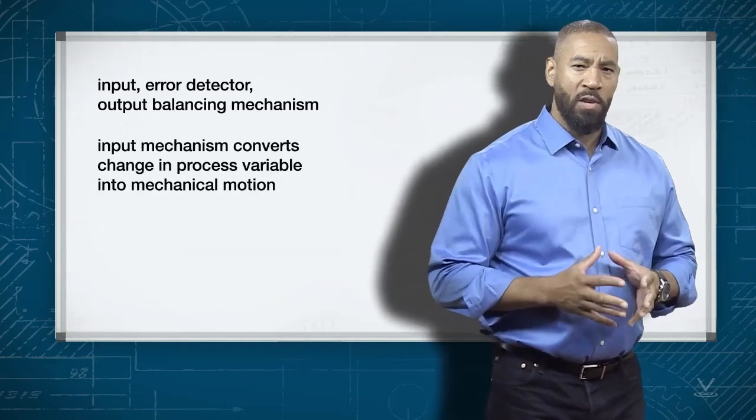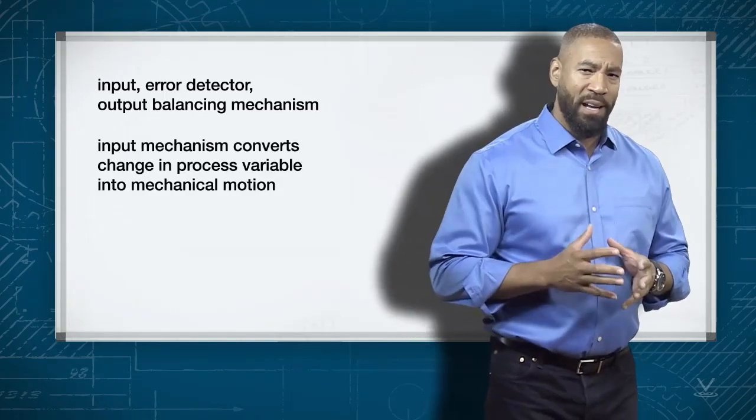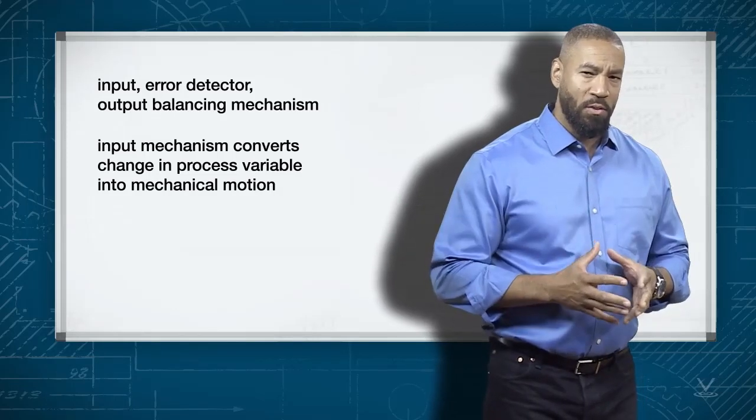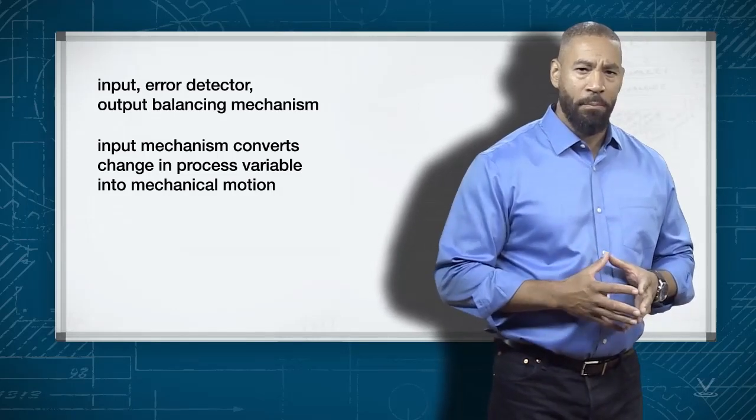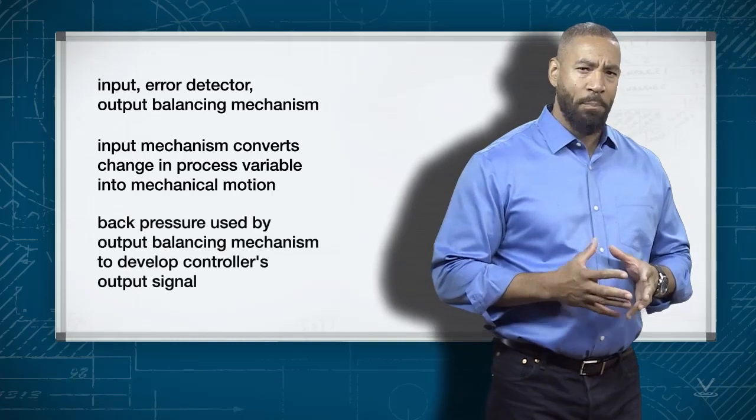An input mechanism converts a change in a process variable into a mechanical motion, which is sensed or detected by the error detector. The output from the error detector, called back pressure, is used by the output balancing mechanism to develop the controller's output signal.